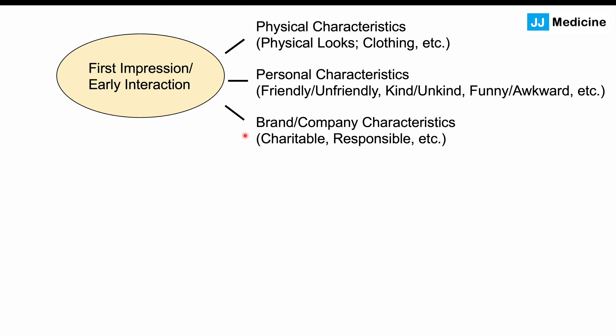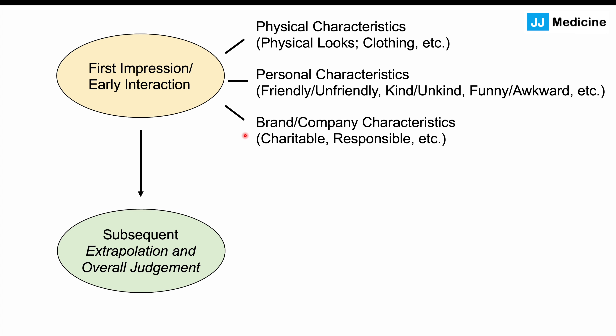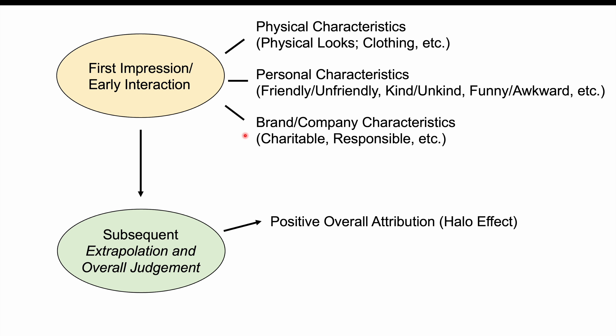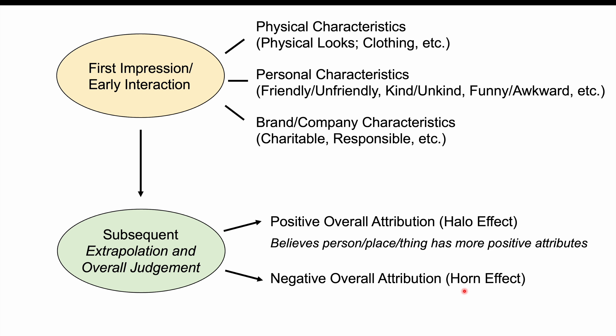If you have these first impressions or interactions, they can lead you to extrapolate further assumptions about that person, company, brand, or country — forming an overall judgment. If it is a positive overall attribution, you start making more positive assumptions about that person, place, or thing — that is the halo effect. If it is a negative overall attribution, that's the horn effect: you believe the person, place, or thing has more negative attributes.